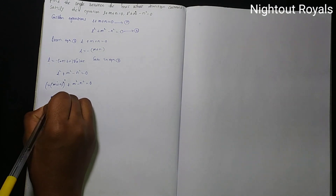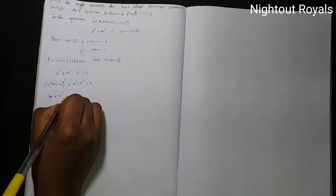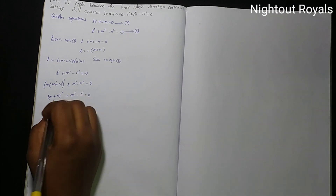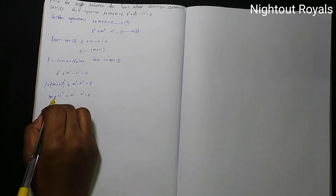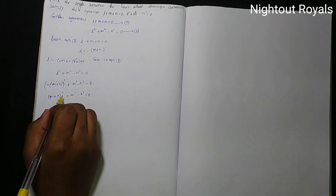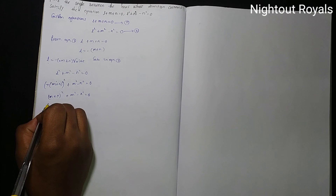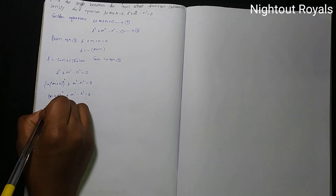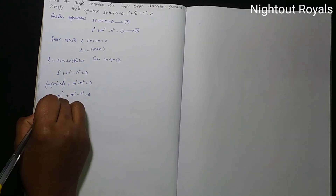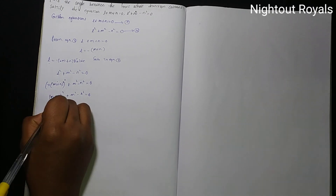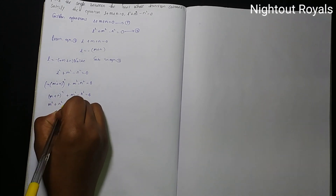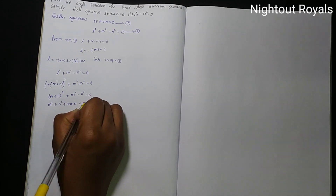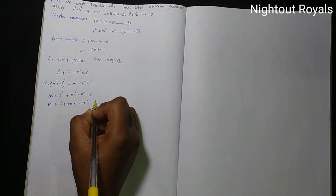Expanding using the formula A square plus B square plus 2AB: M plus N whole square plus M square minus N square equal to 0 gives M square plus N square plus 2MN plus M square minus N square equal to 0.